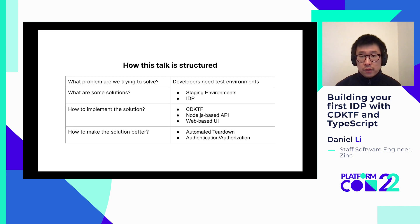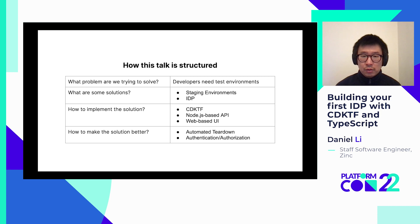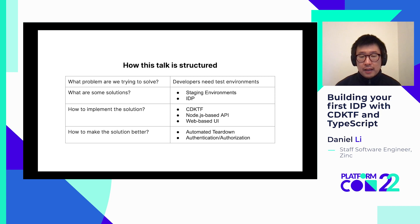I have structured this talk into four sections. In the first section, I will explain the fundamental problem that an IDP attempts to solve. In the second section, I will look at how a staging environment is a possible solution, and how an IDP can complement staging to provide a more flexible solution. Then, in the third section, I will show you at a high level how to build an IDP from scratch using CDKTF with TypeScript, Node.js, and React. At the end, I will also explore some common features found in IDPs that we don't have time to cover today.